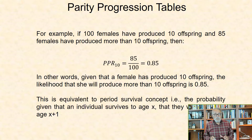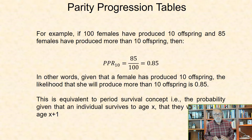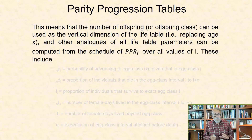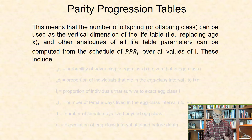This is equivalent to the survival concept in the life table — that is, the probability given that an individual survived to age x, that they will survive to age x plus 1. This means that the number of offspring or offspring classes can be used as the vertical dimension of the life table, replacing age x.